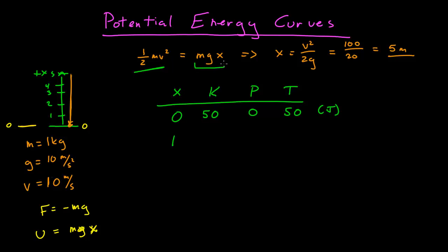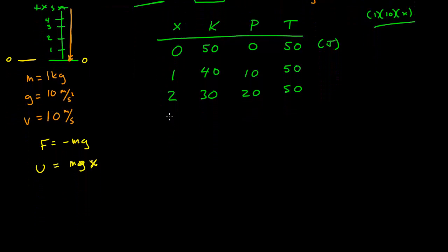At x equals 1, now our potential energy goes up to 10, because mass is 1, g is 10, and x equals 1, our potential equals 10. Our total energy has not changed, so our kinetic is down to 40. At 2, our potential energy is now up to 20, our total is still 50, so our kinetic is 30. I think you can see a trend coming.